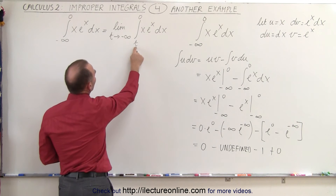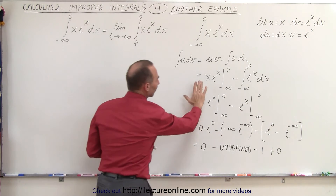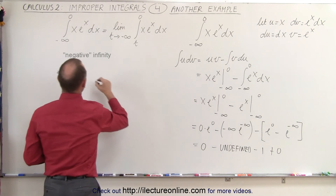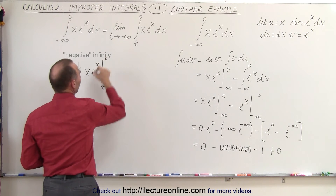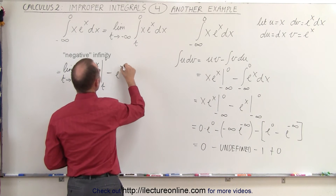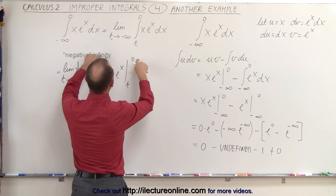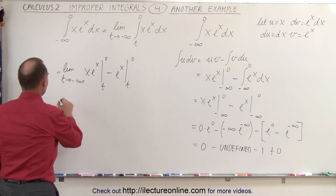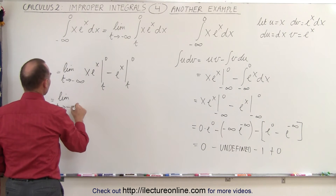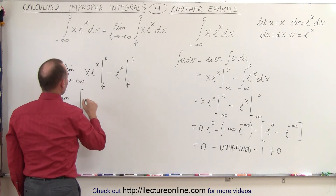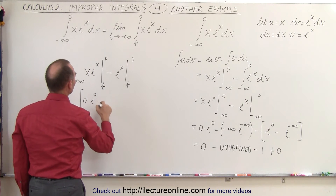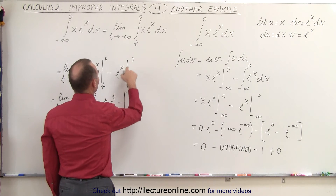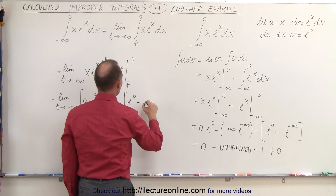We have the same integral result, but now we write it as the limit as t approaches negative infinity of x·eˣ evaluated from t to 0, minus eˣ evaluated from t to 0. Plugging in the upper limit gives 0 times e⁰, minus — plugging in the lower limit — t·eᵗ. Then minus: plugging in the upper limit gives e⁰, and minus the lower limit gives e^t.